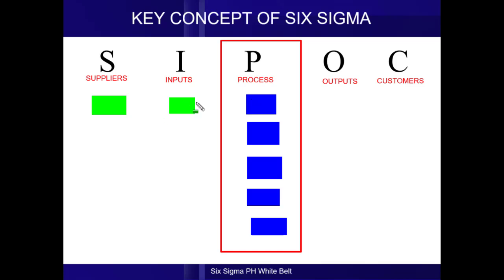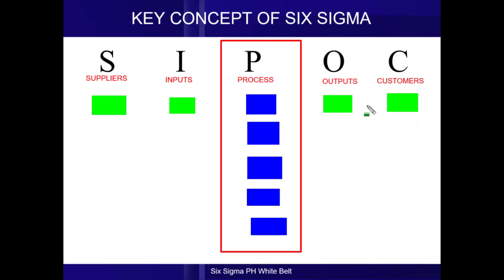When you're done with the left side, you go to the right and identify all of the outputs that shall be produced after completing the process step. Then identify all of the customers or recipients of all of the outputs generated by that process step.